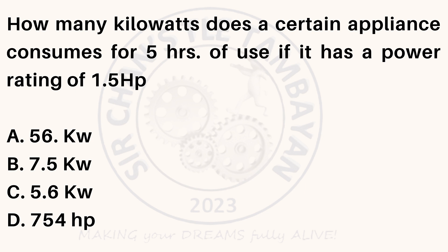How many kilowatts does a certain appliance consume for 5 hours of use if it has a power rating of 1.5 horsepower? A. 56 kilowatts. B. 7.5 kilowatts. C. 5.6 kilowatts. D. 754 horsepower.